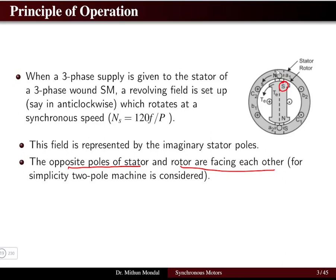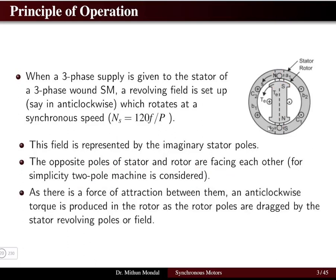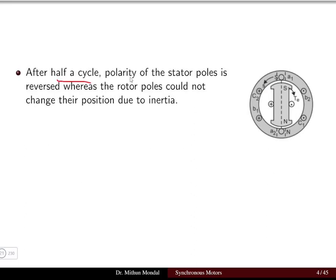Consider that the rotor revolving field is rotating in the anti-clockwise direction. The field is represented by imaginary stator poles — the north pole and south pole representing the stator poles corresponding to the revolving magnetic field. The opposite poles of the stator and rotor face each other. In a two-pole machine, the north and south poles are facing each other. There is a force of attraction between them and an anti-clockwise torque is produced in the rotor, which is dragged by the stator revolving poles.